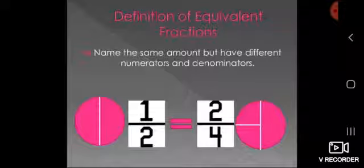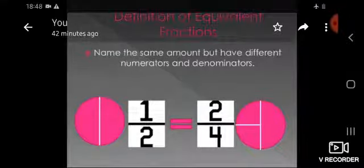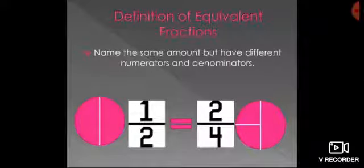The next fraction is equivalent fraction. What is the definition? They name the same amount but have different numerator and denominator. Whether the numerator or denominator is different, when we solve it the amount comes out the same. For example, 1 upon 2 and 2 upon 4 — numerator and denominator are different, but when we solve them, both give the same value: half.